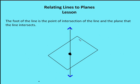The next definition is what's called a foot. The foot is the point of intersection between a line and the plane that the line intersects. If a line passes through the plane, it creates a foot — one point of intersection. If the line touches the plane in more than one spot, then the line is part of the plane itself.